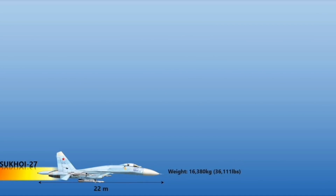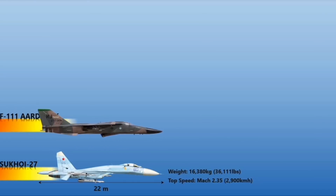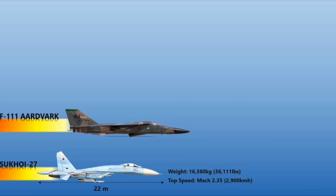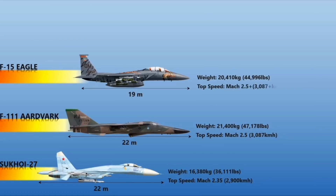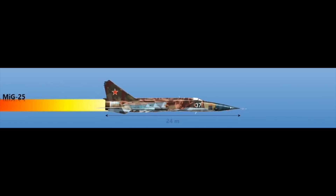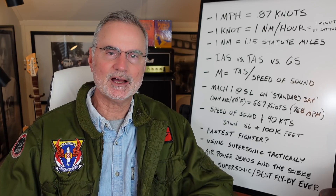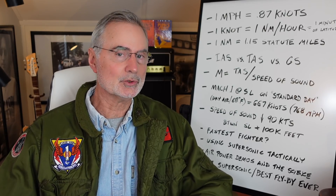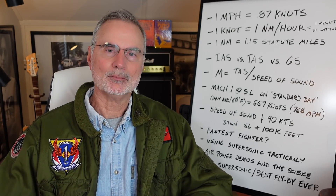Let's take a look at a ranking of some jets. The Sukhoi Su-27 is capable of Mach 2.35. The F-111 — which also uses the TF-30, though designed specifically for it — tops out at Mach 2.5. The F-15 Eagle is also capable of Mach 2.5, the same as the Aardvark. The MiG-31 Foxhound is capable of Mach 2.83. And the fastest military jet of all is the MiG-25, capable of Mach 3.2.